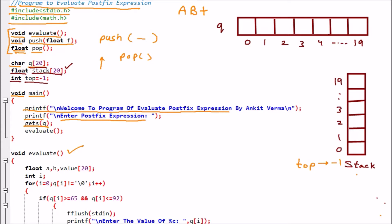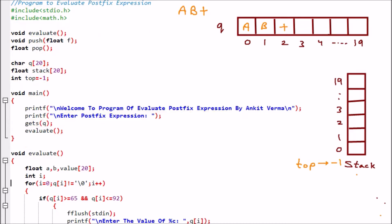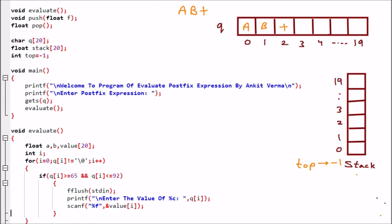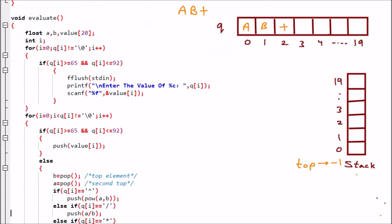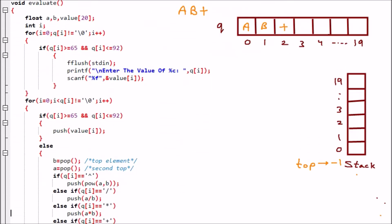gets(q) takes the string the user entered and stores it into the q array. So AB+ is now part of q. Then evaluate() is called from main, and we scroll down to the evaluate function where the operation will be performed.